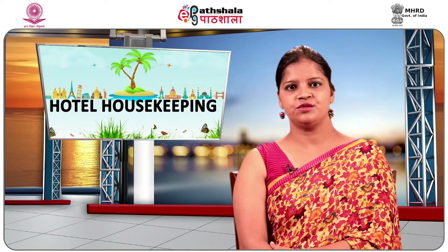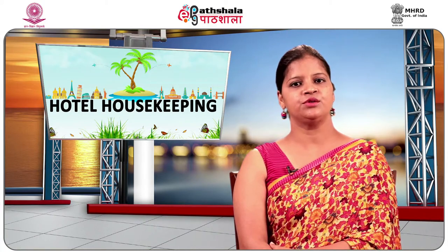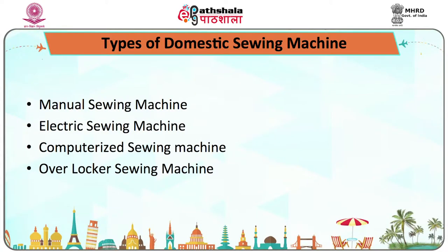Apart from use, sewing machines are also classified according to the functions and facilities available. Domestic sewing machines are of four types: manual sewing machines, electrical sewing machines, computerized sewing machines, and overlocker sewing machines.